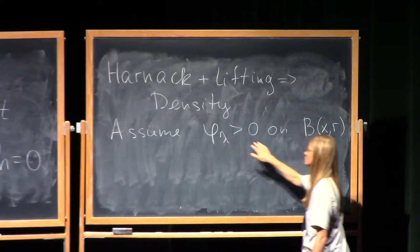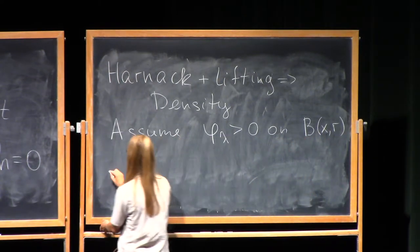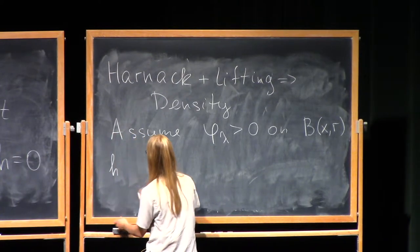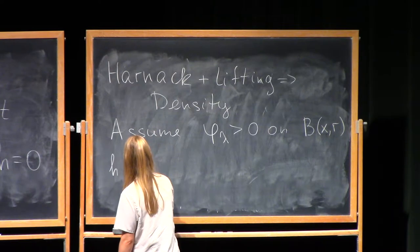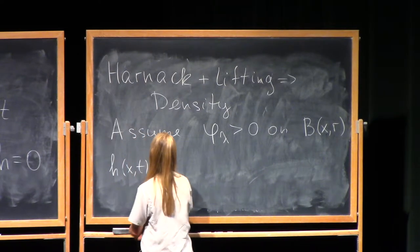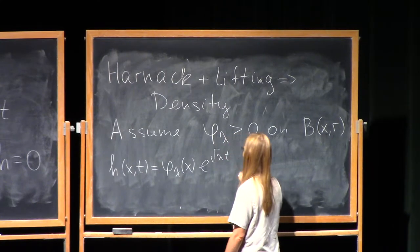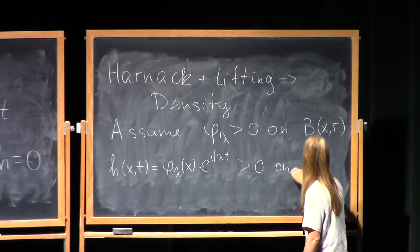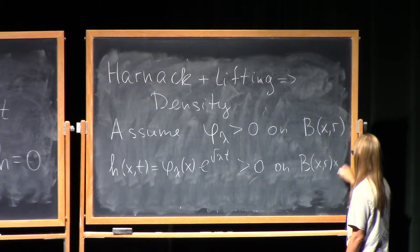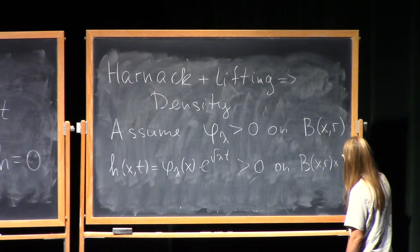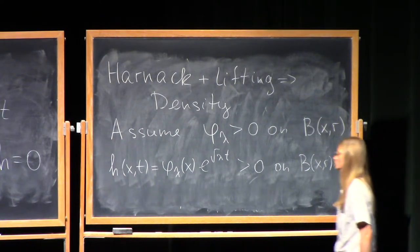Another way of writing that the distance from x to the zero set is larger than r. My function has the same sign on this ball. Look at the function h, that is the lift of the eigenfunction. This is positive on the product of this ball times the whole real line. It will take just a small part of it.